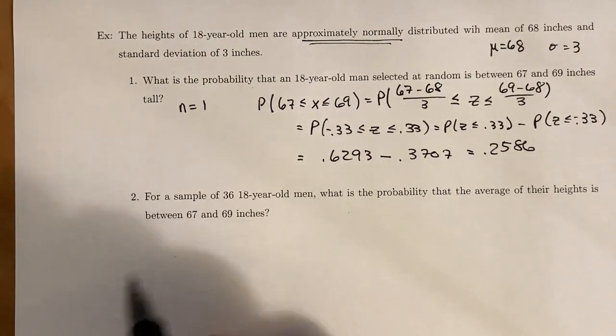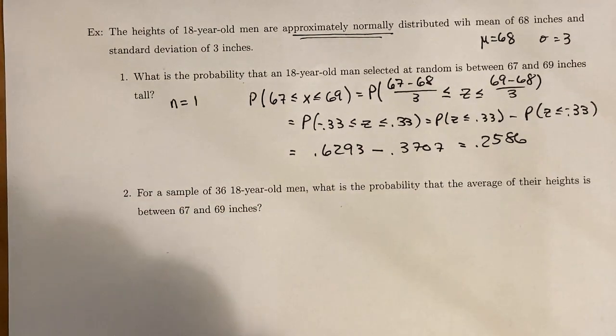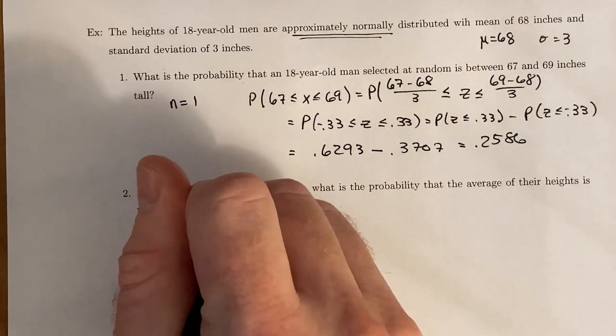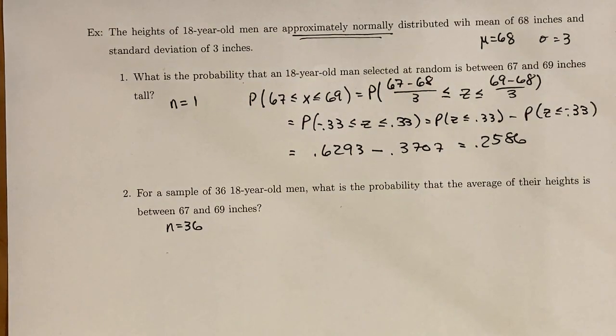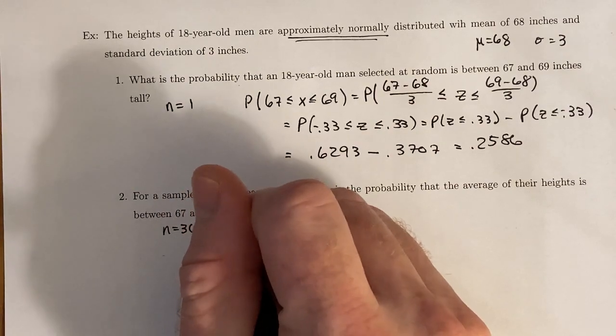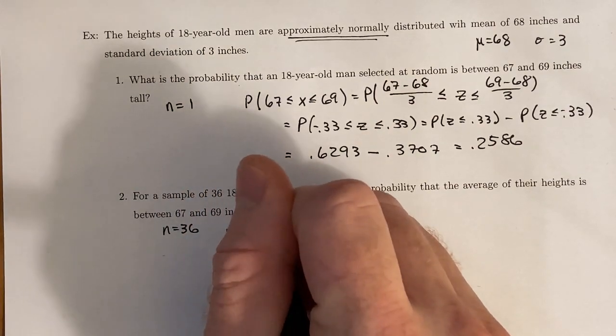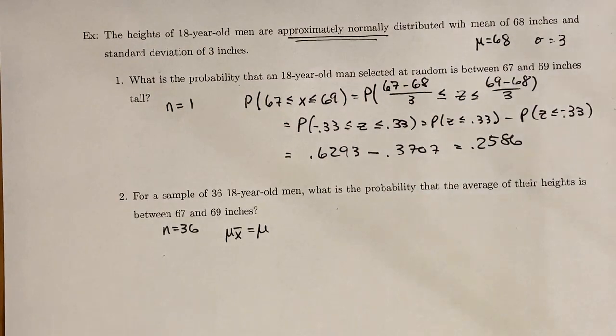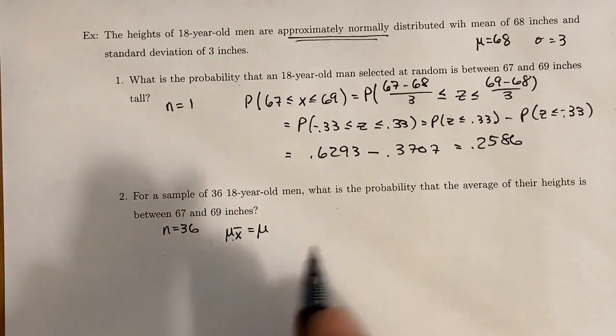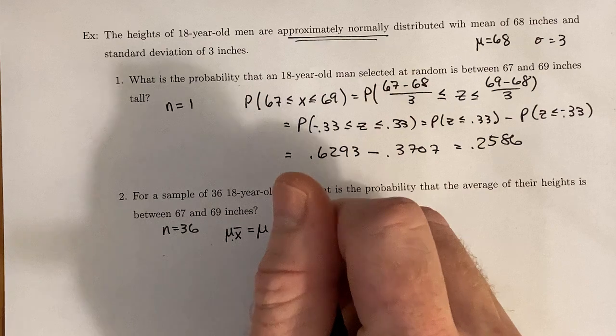Now, let's say that we take a sample of 36 18-year-old men. We want to find the probability that the average of their height is between 67 and 69. So we are looking at the sampling distribution. And remember that the mean of the sampling distribution of sample means is equal to just the regular population mean, which is 68.